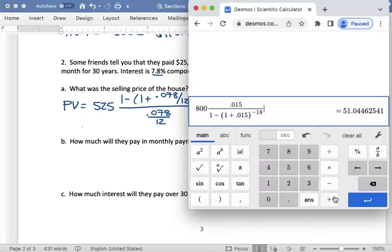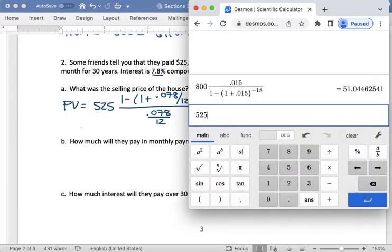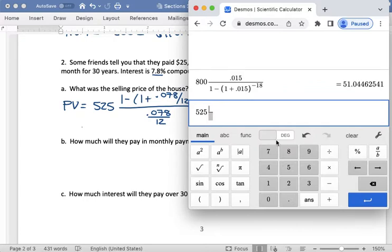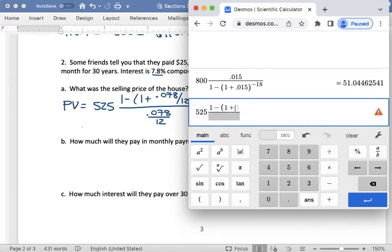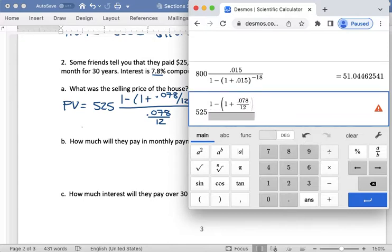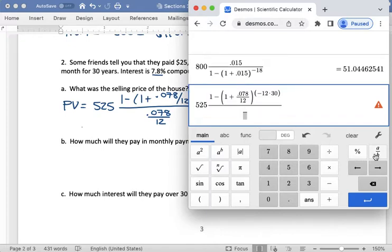So bringing up my calculator. I'm going to use parentheses here. Again, I can figure out what this is mentally. But if I don't know what it is, I need to use parentheses around that multiplication. Okay, so we get a value here of $72,929.78.